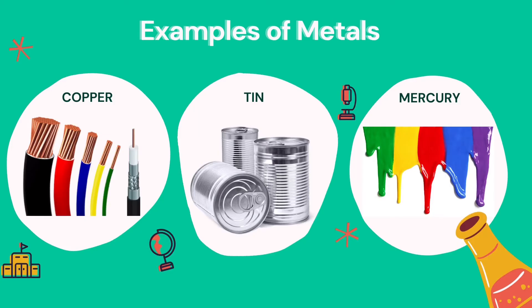Most metals are not like that because they are usually hard solids at room temperature. Mercury is widely used in the production of paint and various industrial and control instruments, such as thermometers and thermostats.